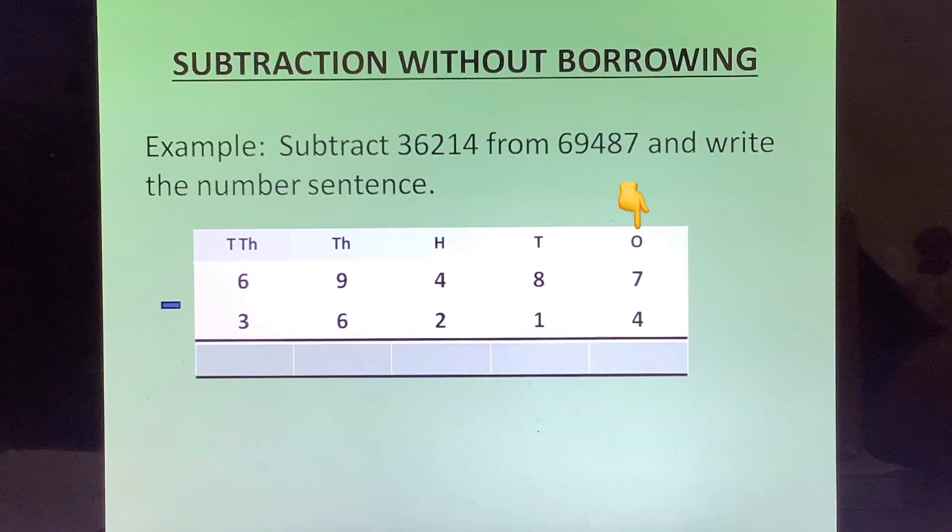7 minus 4, that gives us 3. 10th column we have 8 minus 1, that is 7. Next we have 4 minus 2, that is 2.